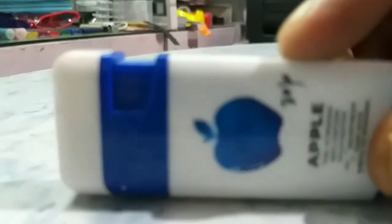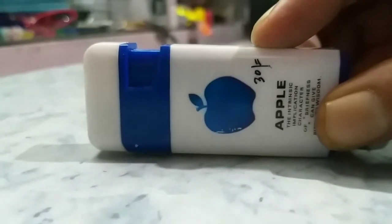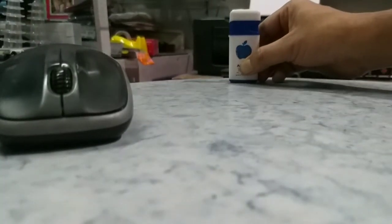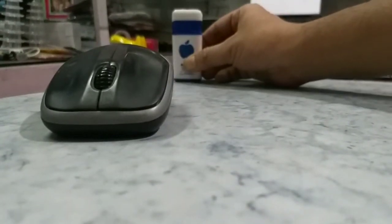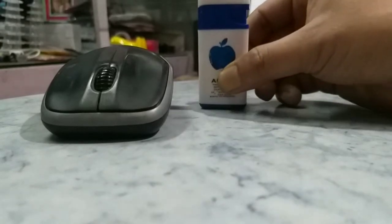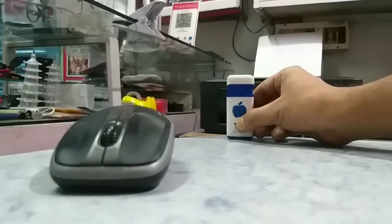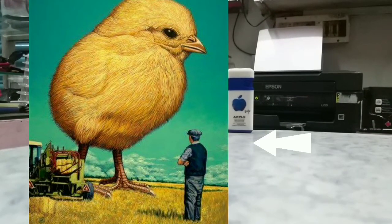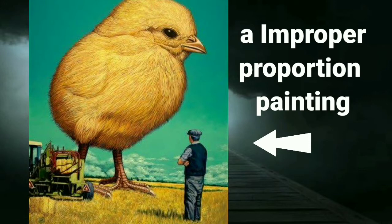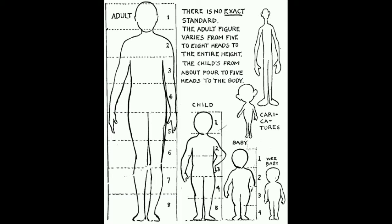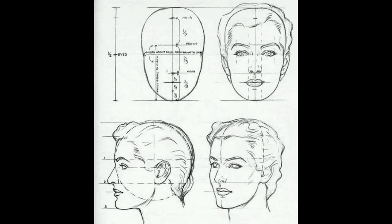In art, proportion means the measurement of various components of the picture according to its shape, size and position relative to our eyes. Anything closer to our eyes looks bigger, but as we take it further away, it becomes smaller. This proportion — how much an object gets smaller as it moves away — must be kept in mind while drawing, so the size of every object at any given distance is rendered correctly. Without proper proportion, we can't make a good picture. Even drawing a human figure and face has a fixed proportion.